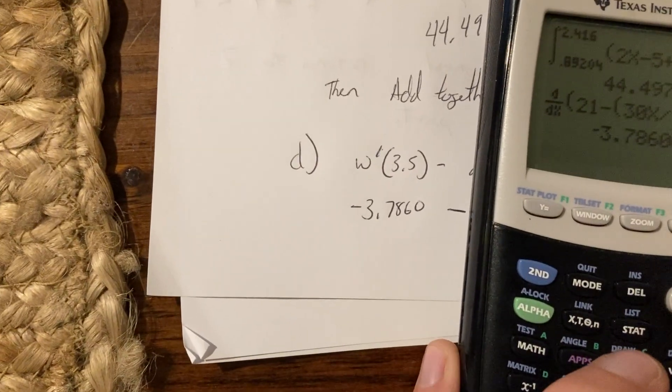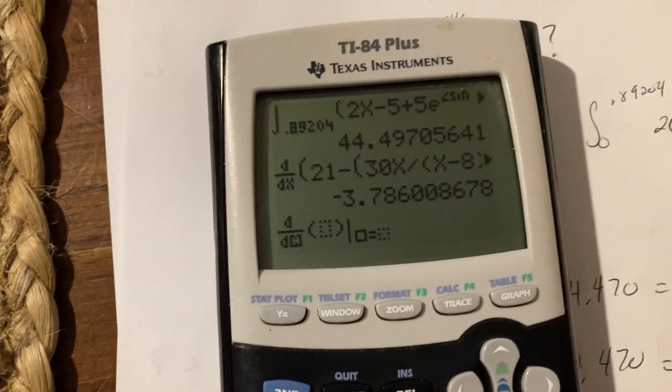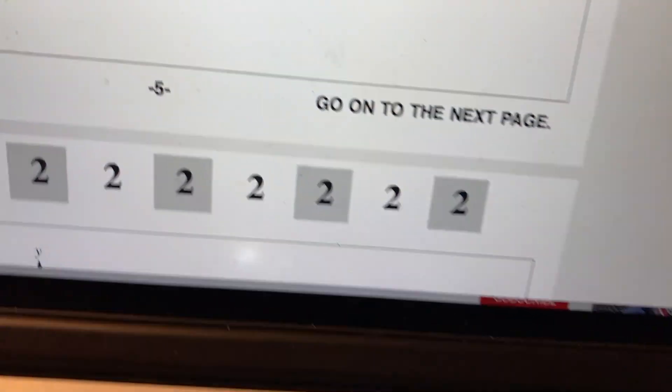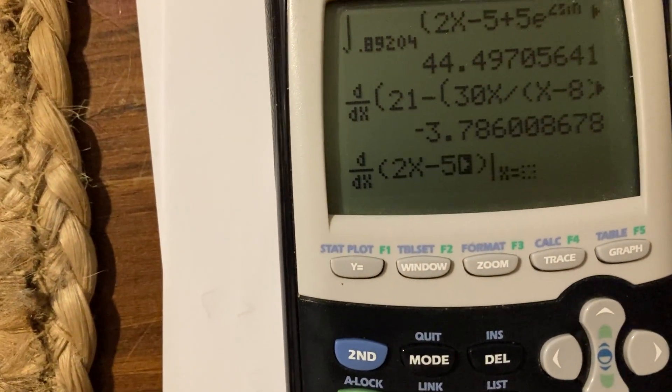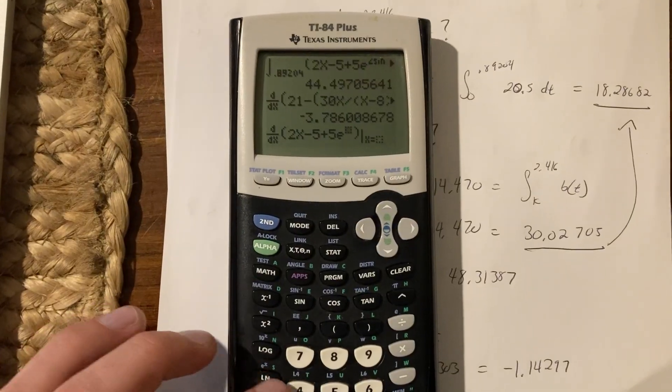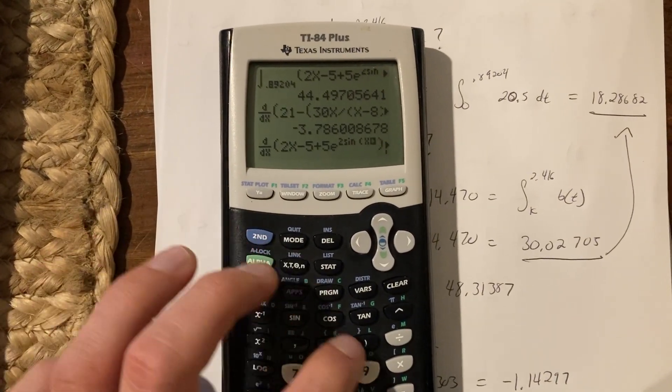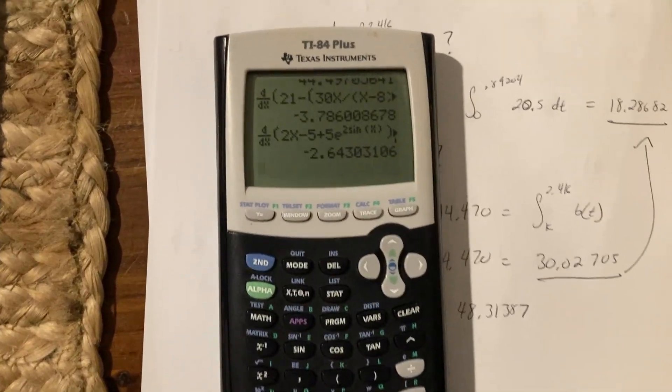So there we go, writing that down, minus we need to get the derivative of a prime. Math 8, x x, and a again is up here, oops my bad, 2t minus 5. Okay, so here we go, it's the 2x minus 5 plus 5, second, e to the 2 sine x, close those parentheses, and I had 3.5.